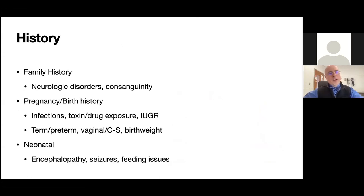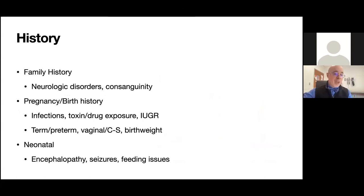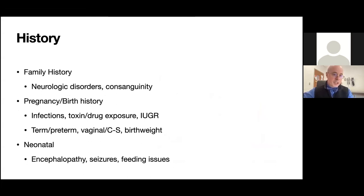When I see these children in clinic and go over the history, I focus on family history: are there neurologic disorders? Is there consanguinity — which is much more common than you think, and always a difficult conversation, but we have to ask. We go over pregnancy and birth history: was there IUGR, drug exposure, infections, preterm birth, C-section, birth weight, and postnatal course.